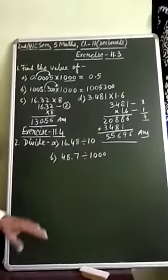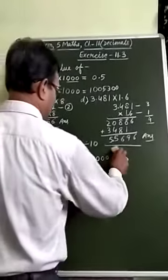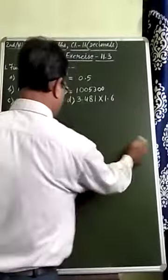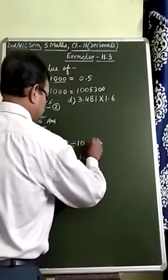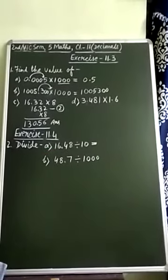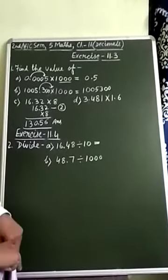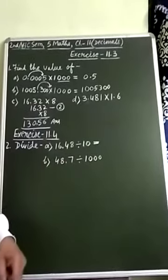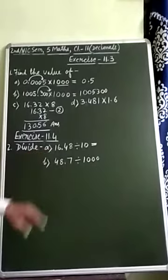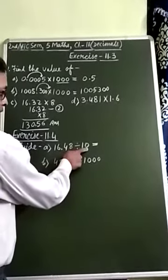Now, see division. Look here, children. We have to divide 16.48 by 10. Division is opposite of multiplication. In multiplication, decimal point moves to the right side. Therefore, in division, decimal point will move to the left side, equal to the number of zeros in divisor.